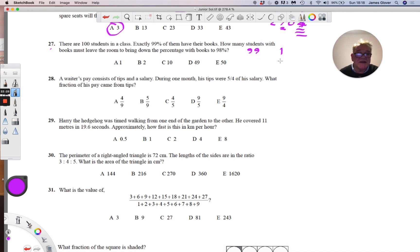One has to be 98% of, sorry, one has to be 2% of the total. And one is 2% of 50. So we want a total of 50.